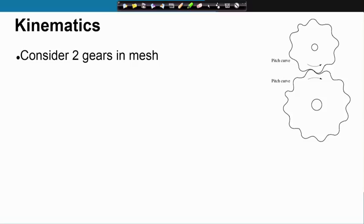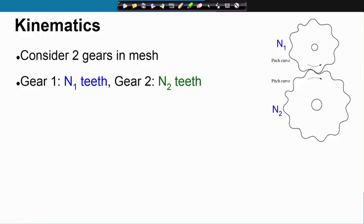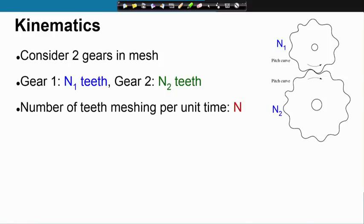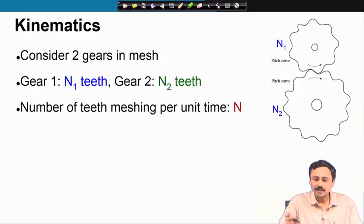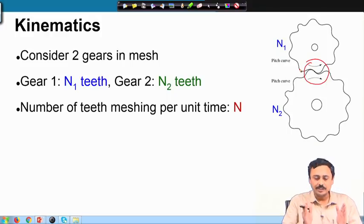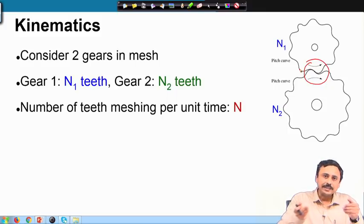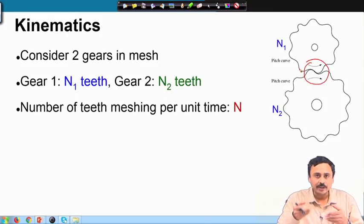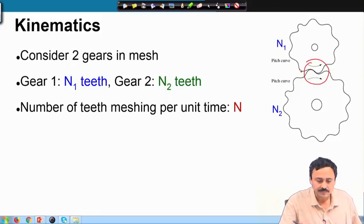Let us consider two gears in mesh and try to understand the motion transmission ratio. Let gear 1 have n₁ teeth and gear 2 have n₂ teeth. In unit time, let n teeth come in contact in the contacting zone. Because the teeth are in mesh for both gears, an equal number of teeth will pass through the contacting zone, so let that number be n.